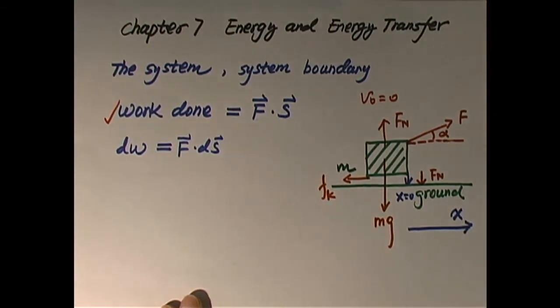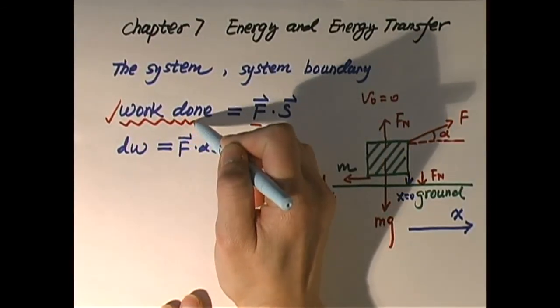Work done by a particular force F is defined as that force dot the displacement of the object. Dot actually means times, but since force is a vector and displacement is a vector, when vector times vector, we have two different kinds of products. One is called dot product, the other is called cross product. A dot product will result in a scalar product, which means F·s comes out a number. The result is not a vector. So the work done, the amount of work done, is simply a scalar.